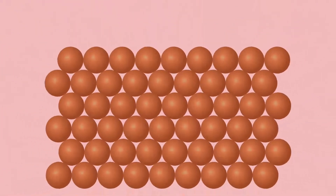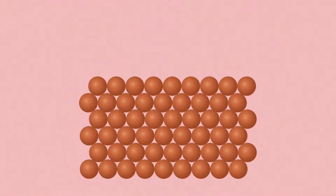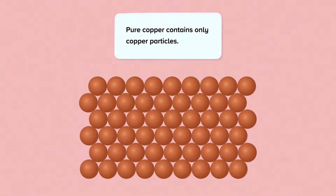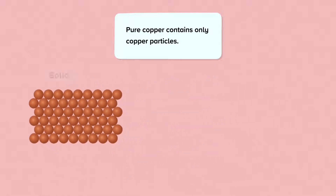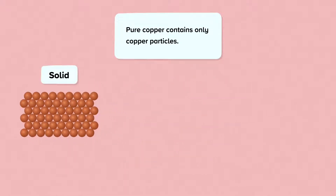Copper is a pure substance and so contains only copper particles. Each of the copper particles is the same as all the other copper particles. Pure copper contains only copper particles. This is solid copper. We can tell by the way the particles are arranged — in solids the particles are in a regular pattern and they are very close together, just as you can see here.